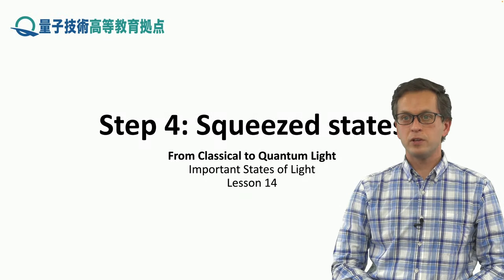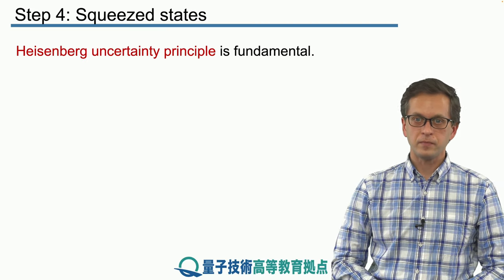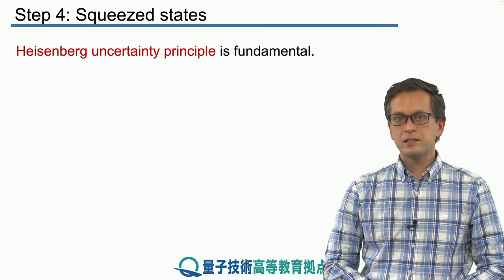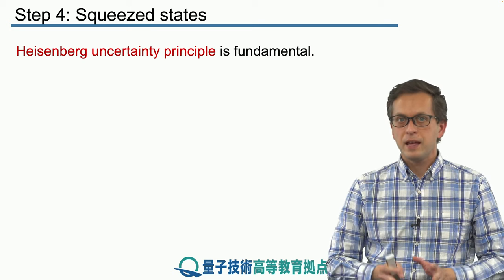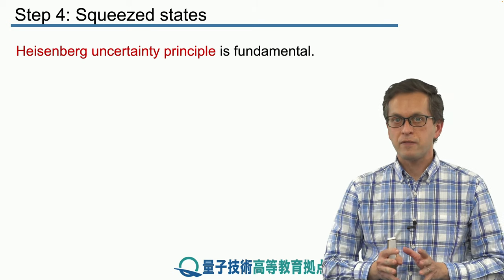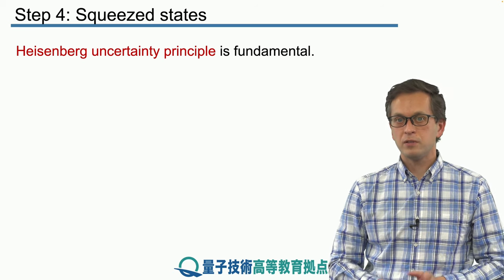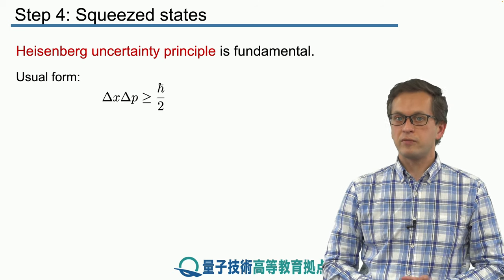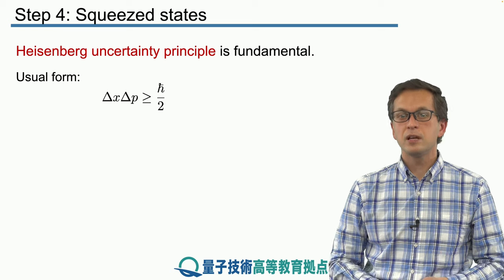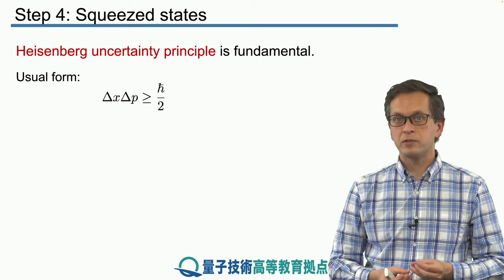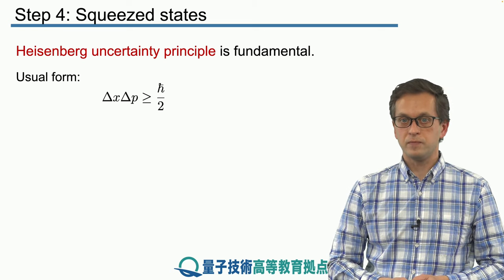Step 4: Squeezed states. Let's talk about the Heisenberg uncertainty relations. It is a fundamental principle of nature that if you take some fluctuations of conjugate variables like x and p, then they have to satisfy the following inequality.